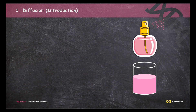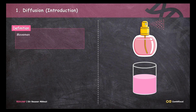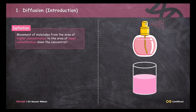So if we try to define diffusion, we can say that diffusion is the movement of molecules from an area of higher concentration to an area of lower concentration, down the concentration gradient.